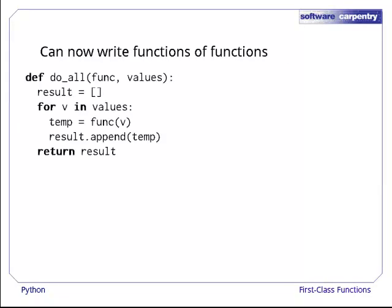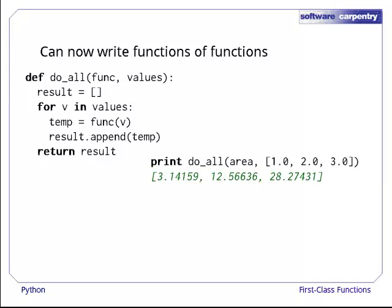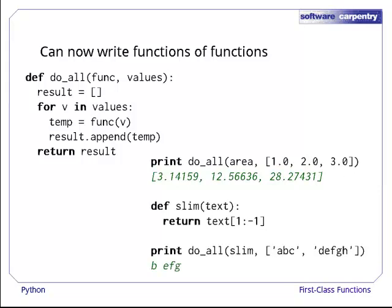Here's a function called doAll that, as its name suggests, applies some function, anything at all that takes one argument, to each value in a list and returns a list of the results. If we call doAll with area and a list of numbers, we get what we would get if we called area directly on each number in turn. And if we define a function to slim down strings of text by throwing away their first and last characters, we can apply it to every function in a list without having to copy the code that loops through the list, calls the function, and concatenates the results.